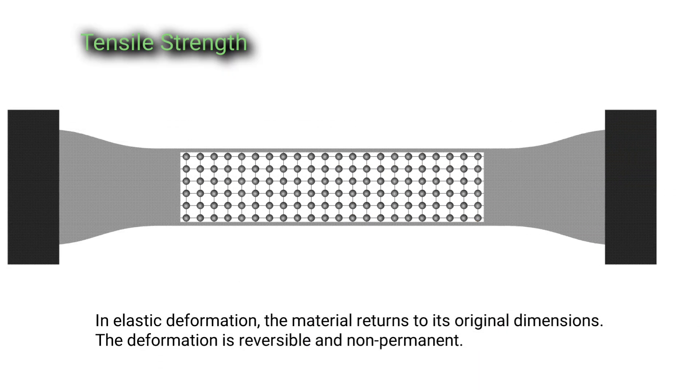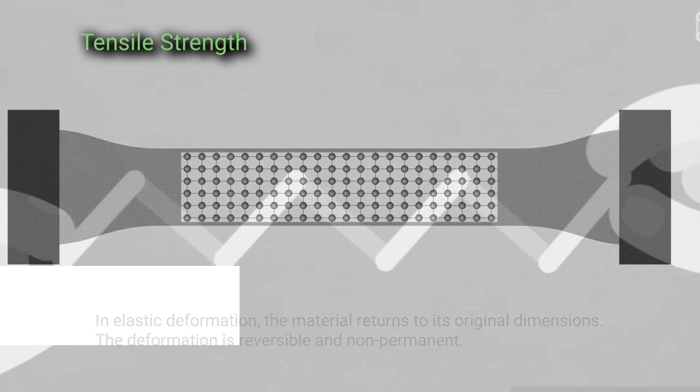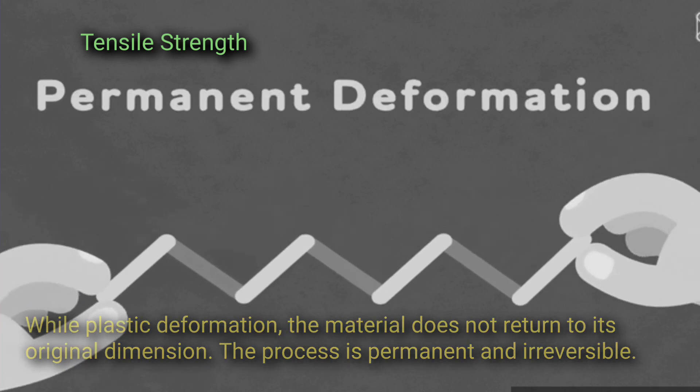In elastic deformation, the material returns to its original dimension. The deformation is reversible and non-permanent. While in plastic deformation, the material does not return to its original dimension. The process is permanent and irreversible.